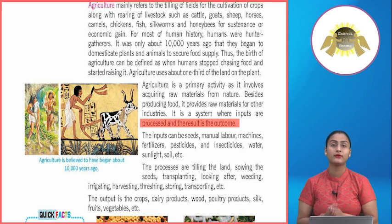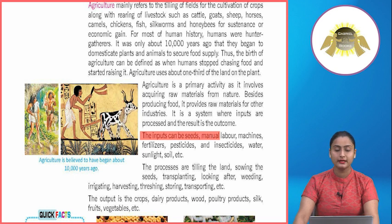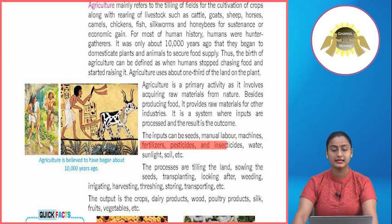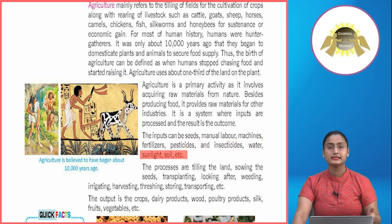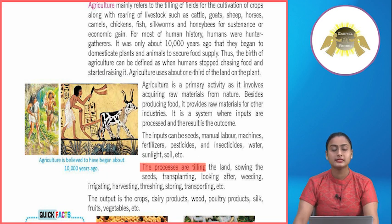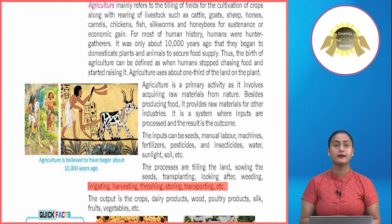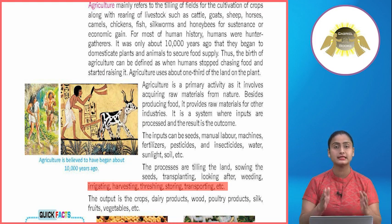Agriculture is a system where inputs are processed and the result is the outcome. Natural resources are involved to provide raw materials for industries and factories. Even human life's sustenance is possible because of agriculture. The inputs can be seeds, manual labor, machines, fertilizers, pesticides, insecticides, water, sunlight, soil, etc. The processes include tilling the land, sowing the seeds, transplanting, looking after, weeding, irrigation, harvesting, threshing, and storing.